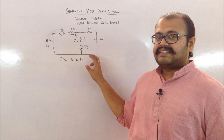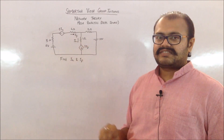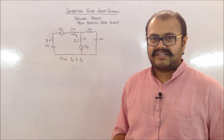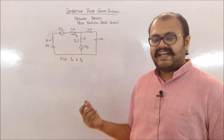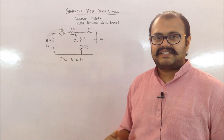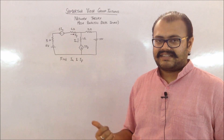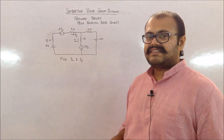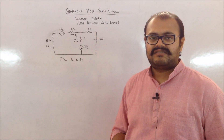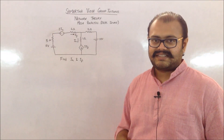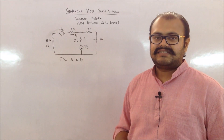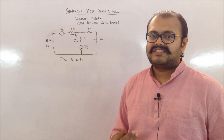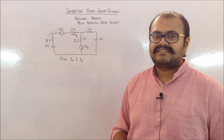In this particular problem, we have two voltage sources whose values are 2Iy and 2Ix respectively. The voltage of each source depends on a parameter present inside the circuit — Iy is the current flowing through the 4 ohm resistor and Ix is the current flowing through the 1 ohm resistor. These are precisely called current dependent voltage sources. Now let's apply mesh analysis to this problem.